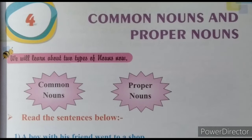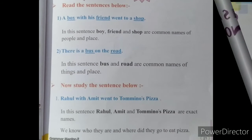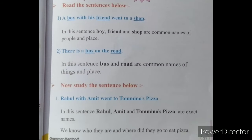Words like what's, child, and city are common nouns. For more explanation, let's read the sentences. A boy with his friend went to a shop. In this sentence, boy, friend, and shop are common names of people and place, so they are called common nouns.